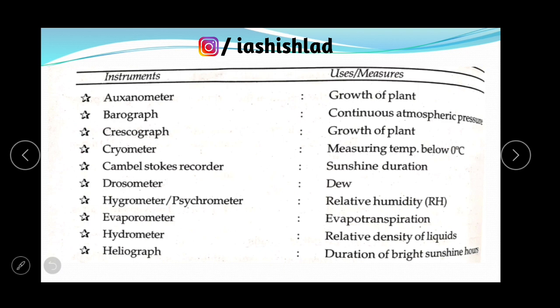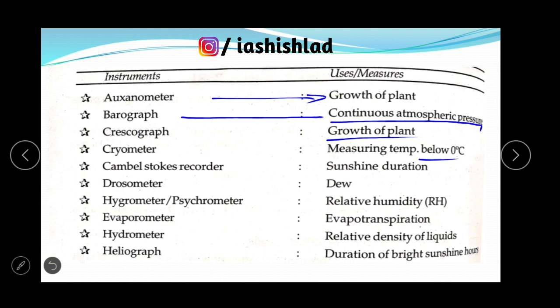Auxanometer is used to measure the growth of a plant. Barograph is used to measure continuous atmospheric pressure. Crescograph is also used to measure growth of a plant. Cryometer is used to measure temperatures below 0 degrees Celsius. Campbell Stokes Recorder measures sunshine duration.